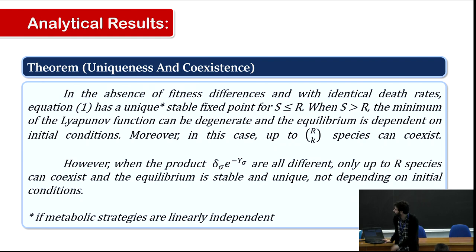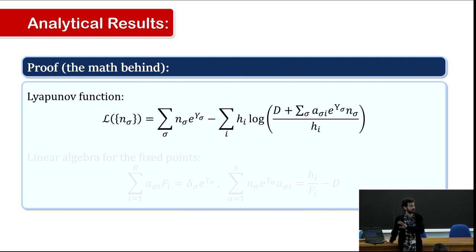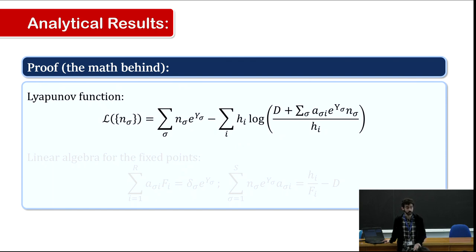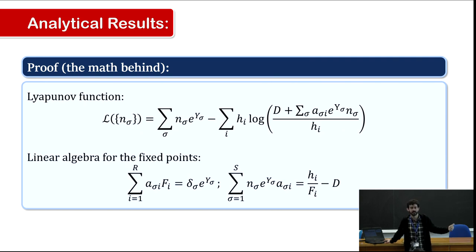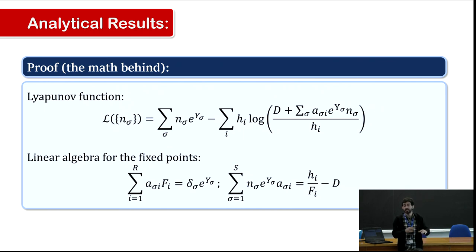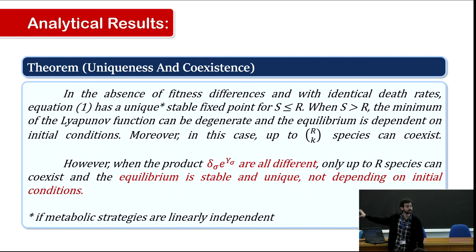The math behind this: we have a Lyapunov function for the system — a convex function that is always decreasing over time and will find a minimum. We just need to show the minimum is non-degenerate. This holds if the strategies are linearly independent; if we have more species than resources, it is certainly not true. To prove non-degeneracy we look at linear equations derived from the system — it's purely linear algebra.